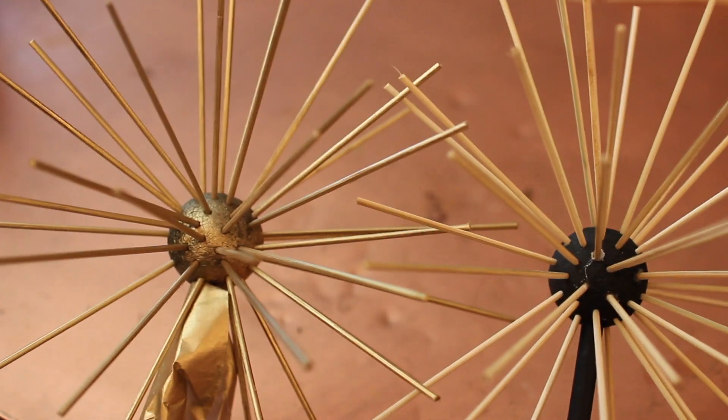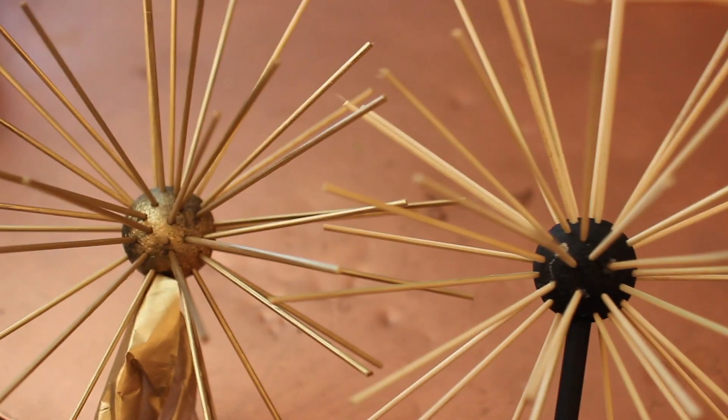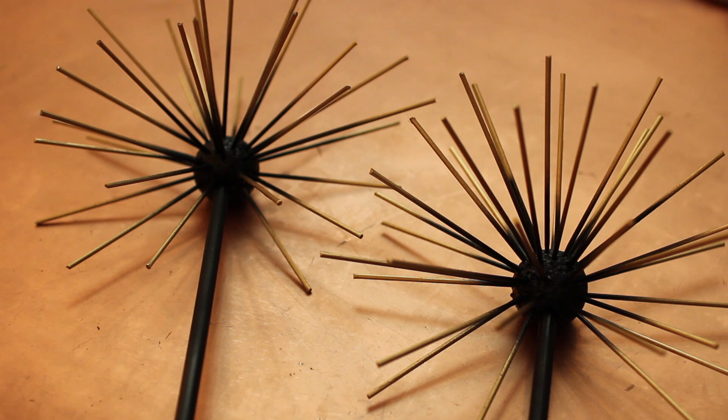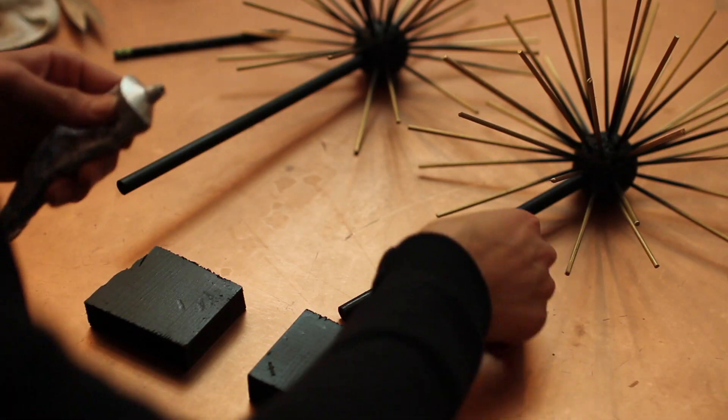I then spray painted it with gold, but you can choose whatever accent color you want, and then I went back in with the black and went super close to the sphere and just painted the inside of it black to give it that little Target-esque feel.